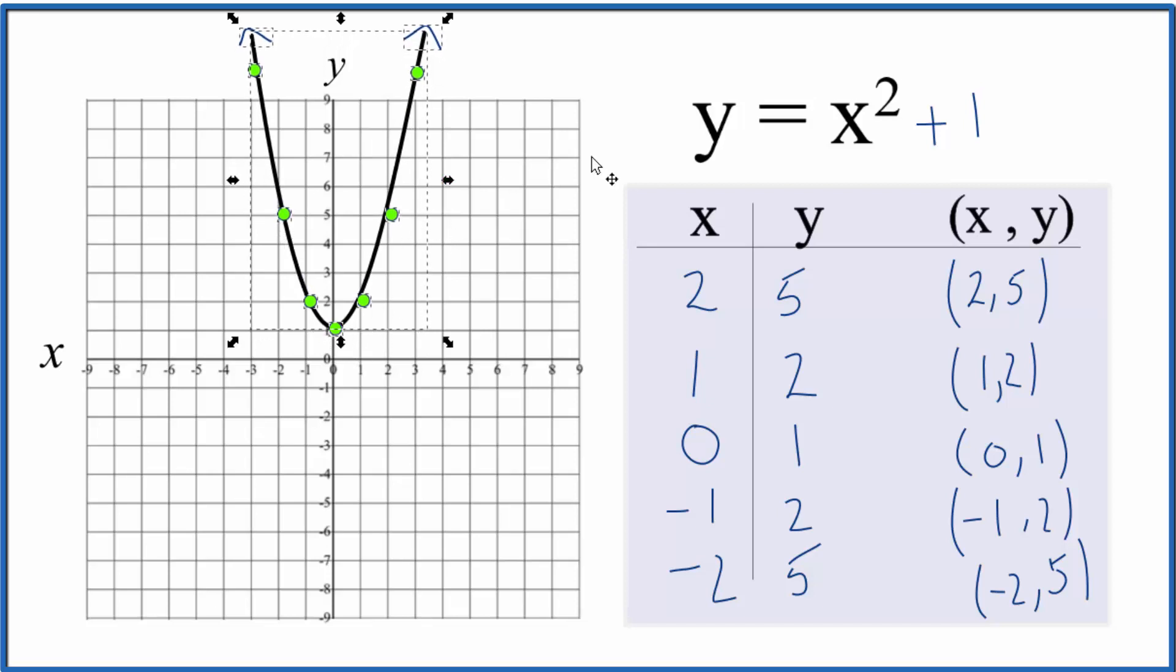If it was x squared plus 2, we'd move our parabola up 2. X squared plus 3 is at 3. So let's go back to y equals x squared here.